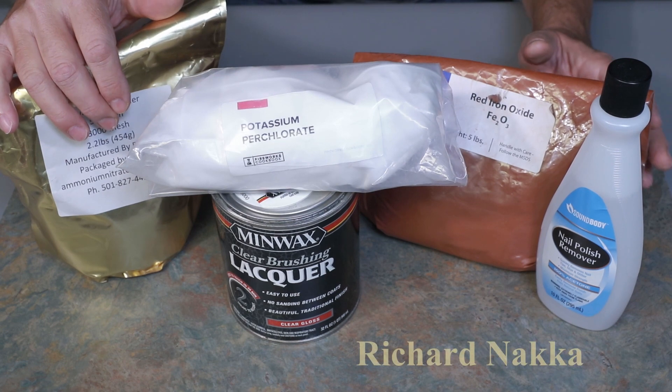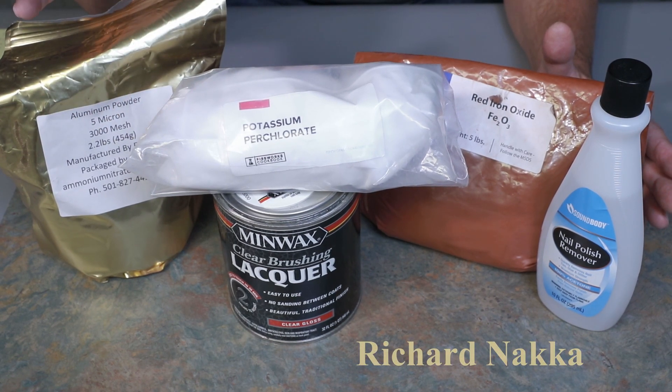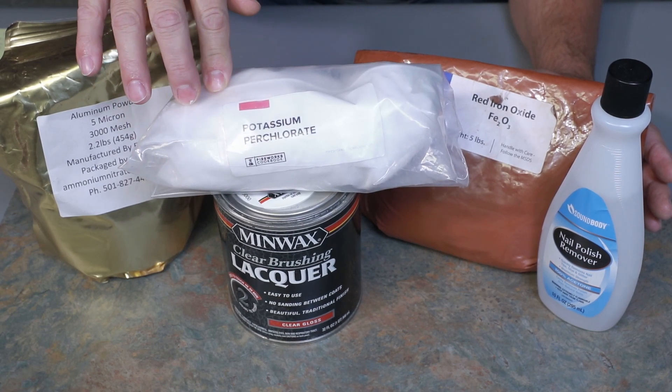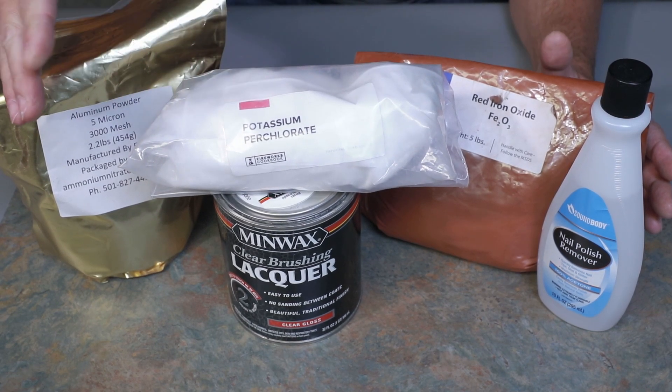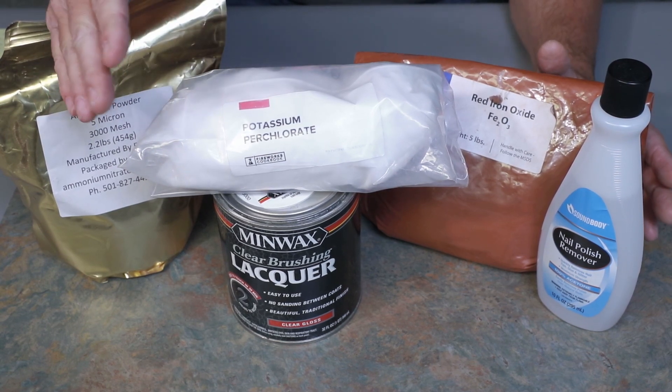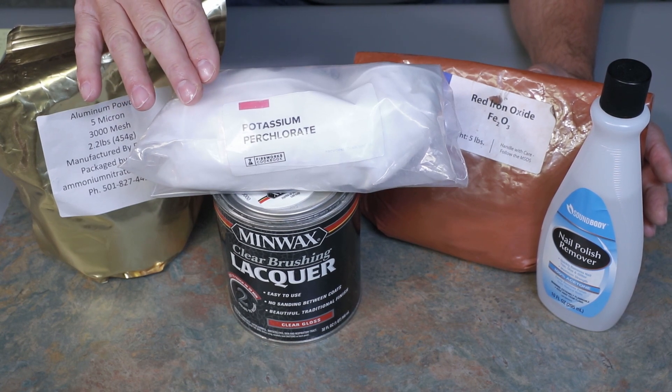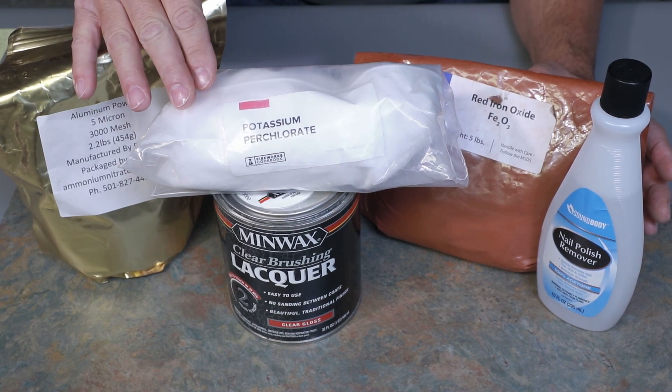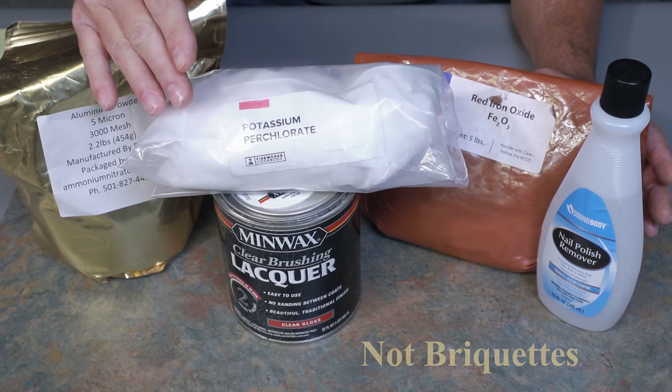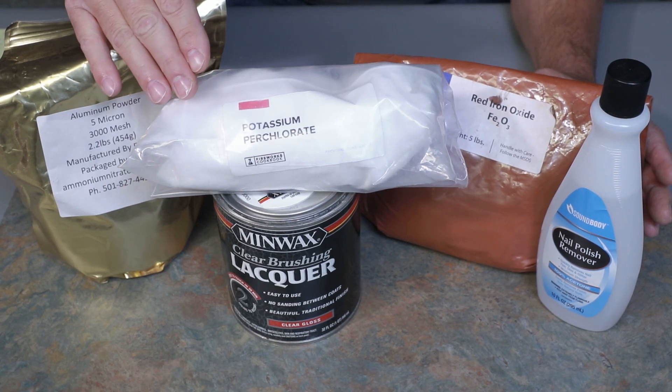The igniter formula is made by Richard Naka, and I've made a lot of these igniters. They work really well. The components are potassium perchlorate, which I got from the fireworks cookbook. I'll leave a link in the description. This may not be legal in your country, you'll just have to check and see. Then I have 20% charcoal, hardwood charcoal, and 10% aluminum powder, 400 mesh.